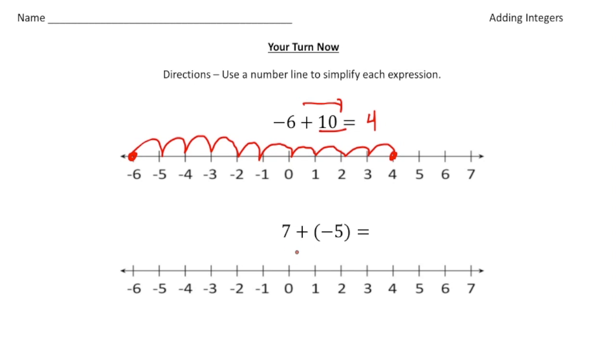The second one, we have 7 and we're adding negative 5. So let me use different color for this one. So we're at 7. And this time, because we're adding a negative, we're going to move that many spots to the left. So 7. So it's going to be one, two, three, four, and five. So we end up at 2. So 7 plus negative 5 equals 2.